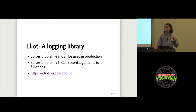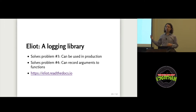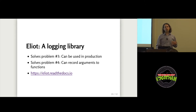PyInstrument only solved the first two problems we saw with CProfile. The other tool I'd like to talk about is Eliot, which is a logging library. Eliot can help you solve the other two problems: it can be used in production — it's a logging library, you can write logs to disk in a production environment. And unlike the profilers we've been seeing, it can actually tell you which arguments cause a particular function to be slow, with some limitations.